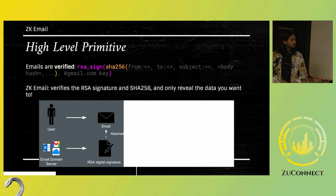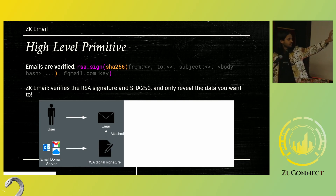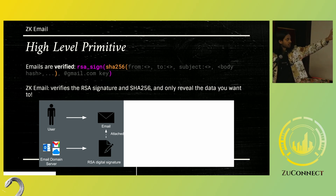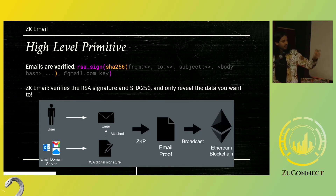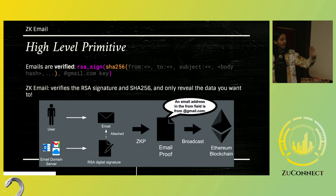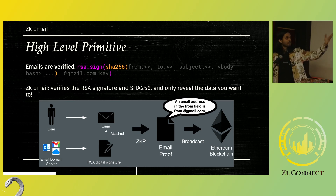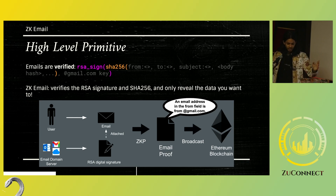So how might you imagine this working? Once you send an email, the email domain server will sign that email with an RSA signature. The user can then present that email to a ZK proof that runs client-side. That email proof can then be broadcast on-chain, and the proof can hide information arbitrarily. For instance, you can say: I can prove that this email had an email address which was from gmail.com, but I'm not going to tell you which person at gmail.com.